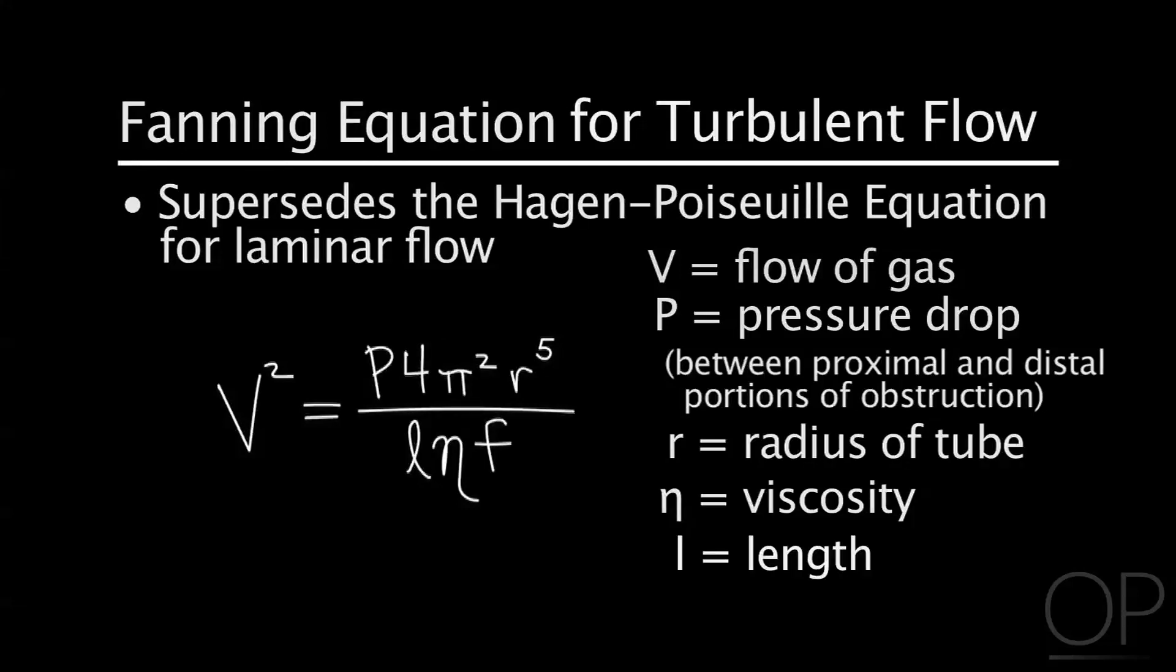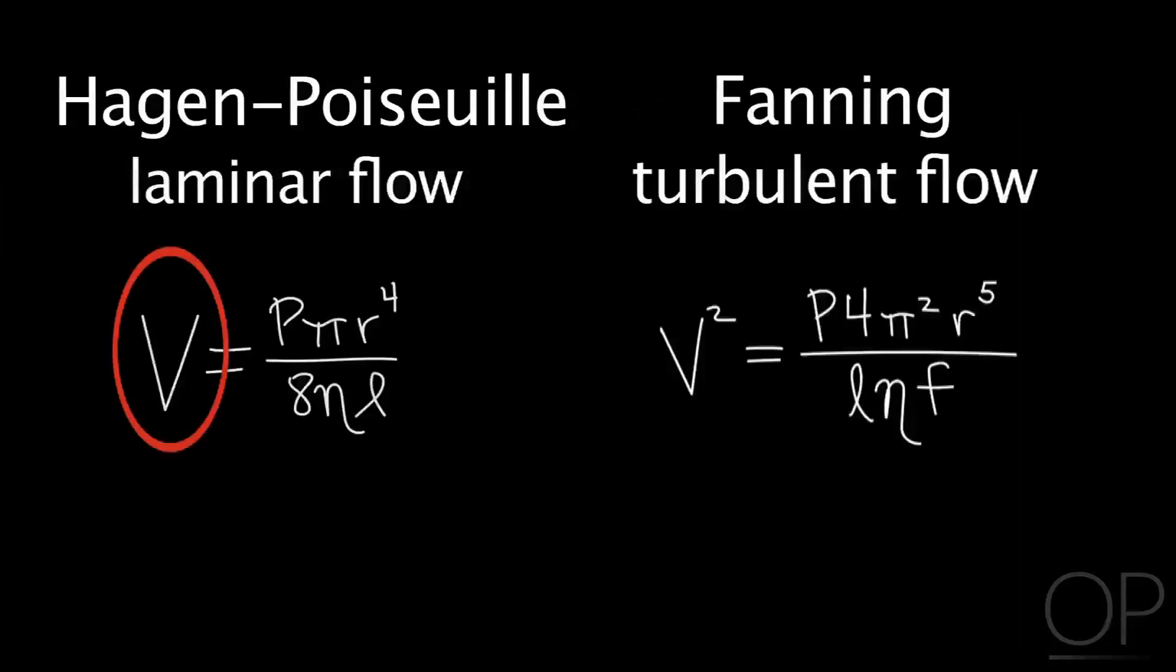The significance of that change in the expression from the flow rate to the square of the flow rate illustrates that a much greater driving pressure is required to maintain gas flow in a non-laminar flow situation. Note also that the power of the radius has to increase to accommodate the more turbulent and less efficient flow.